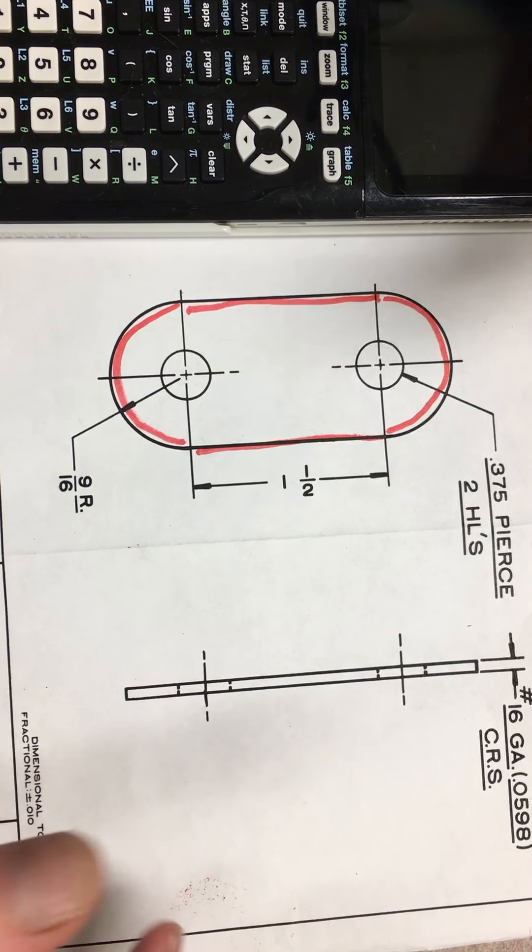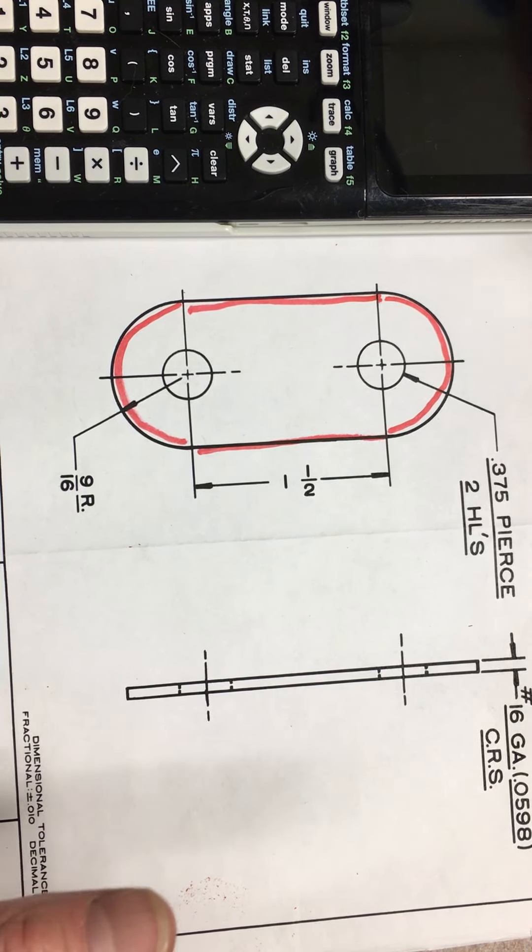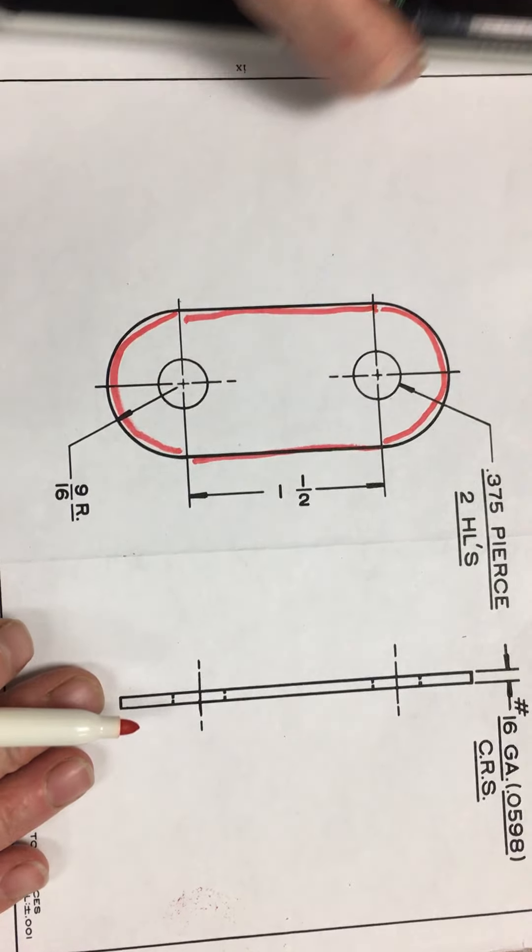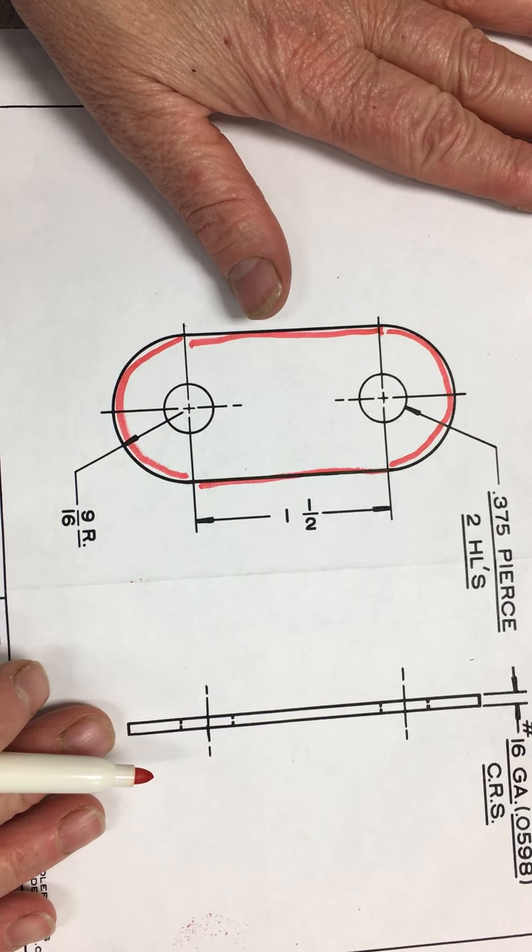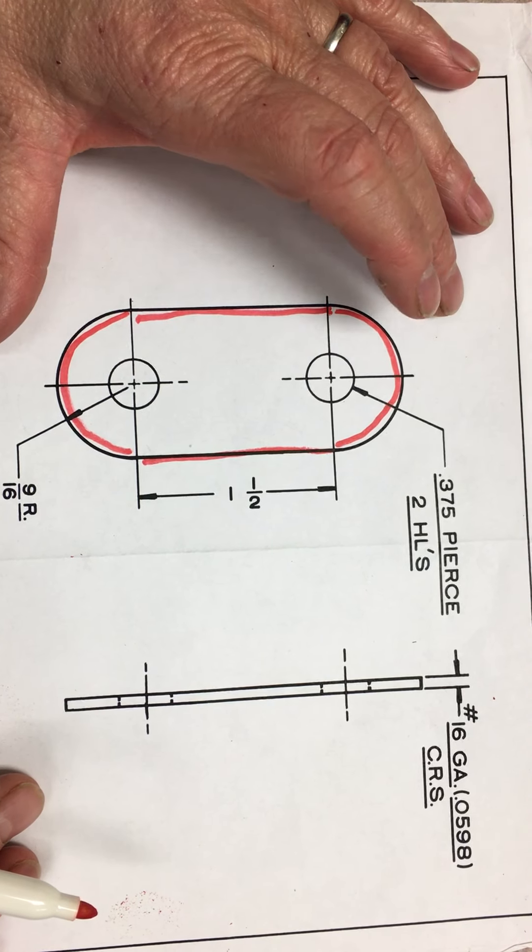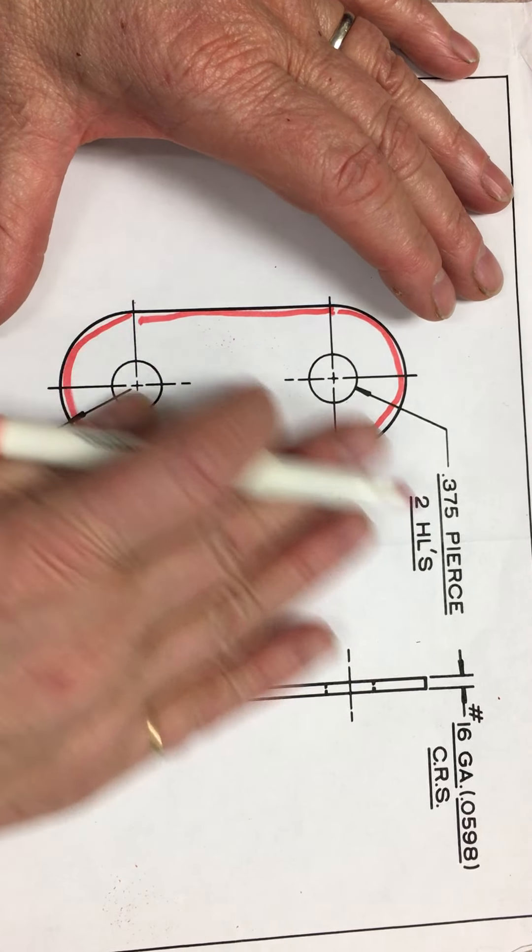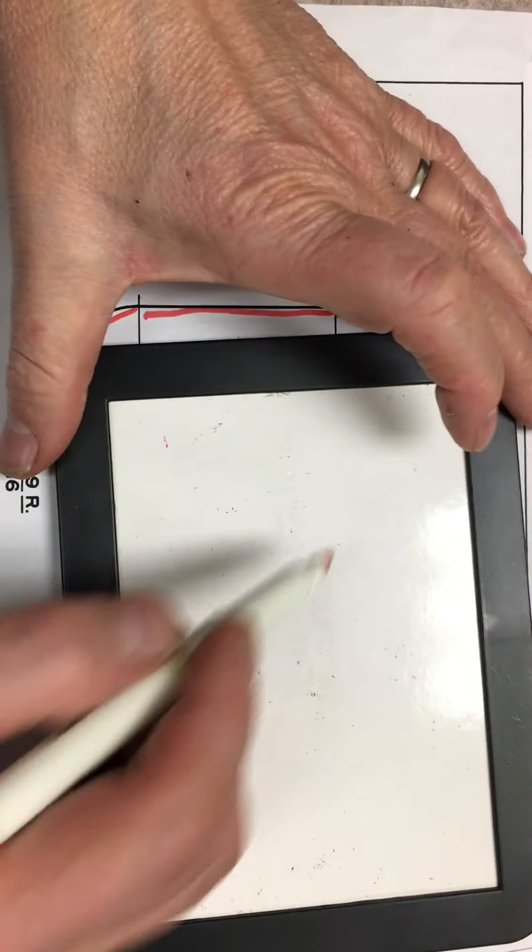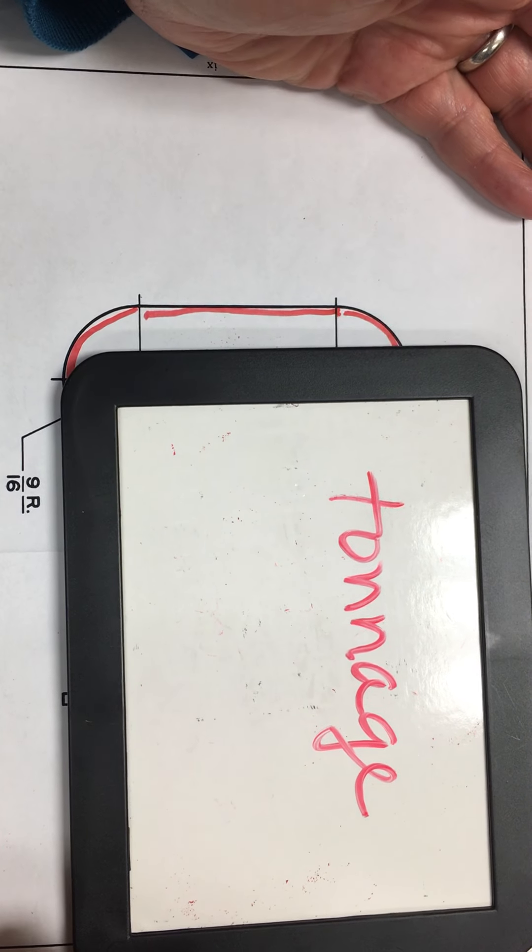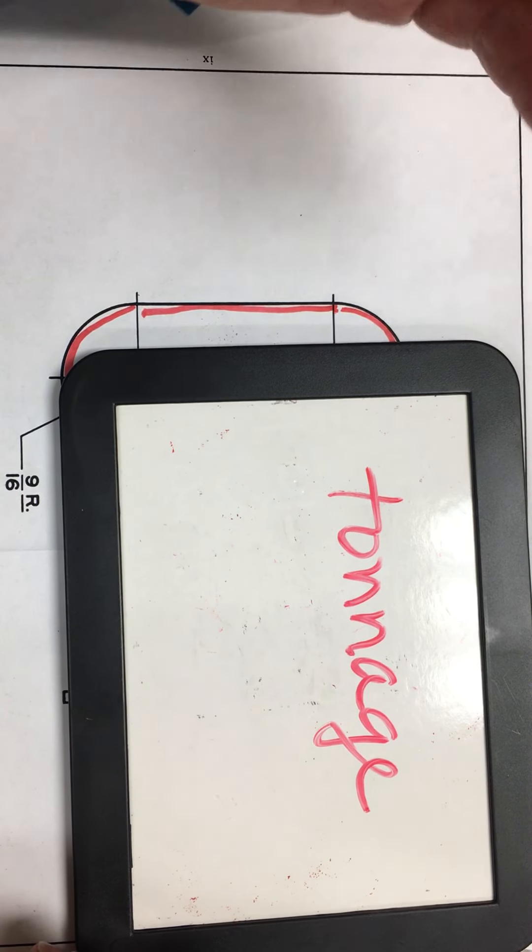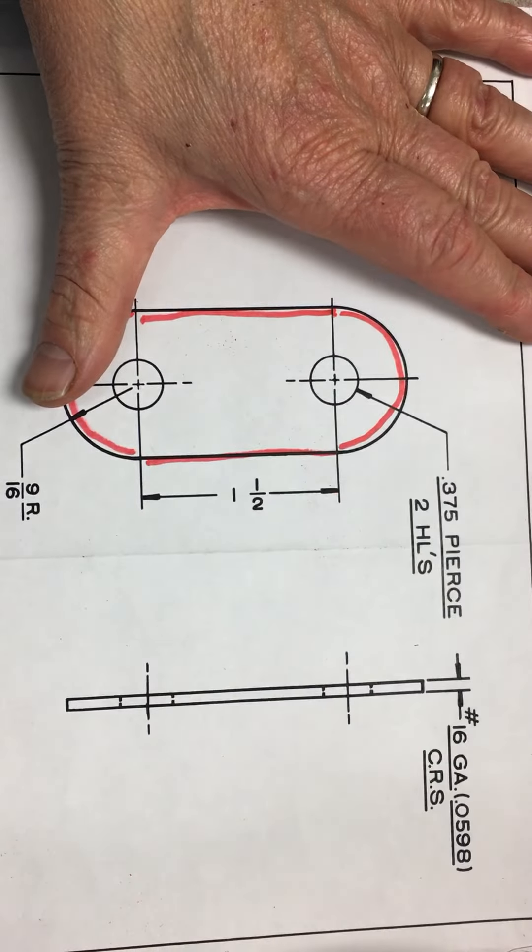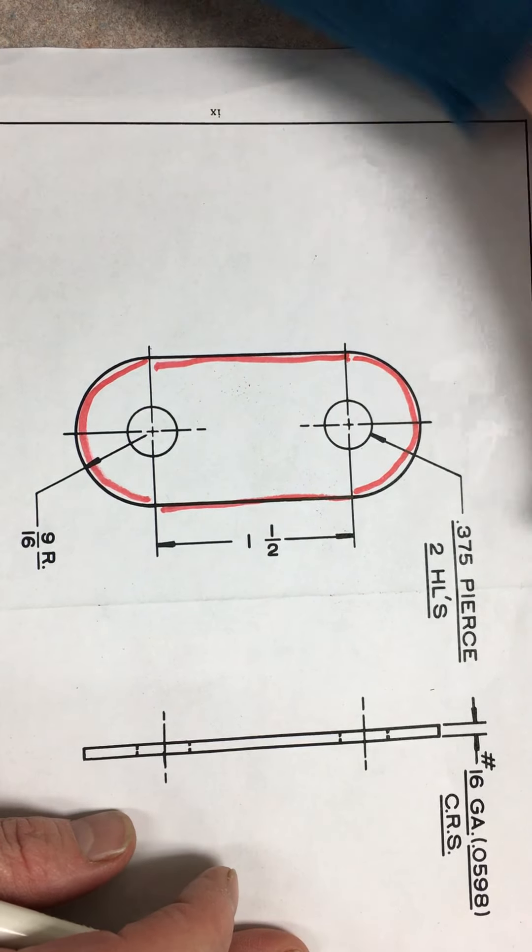That complicated tool is called a progressive die because it does a different variety of steps as the piece works through it. In order to explain how this works, I have a sample drawing here. We start with our drawing and we break down the geometry of it. This information is used to calculate something called tonnage. That number tells us what size of a press to use.